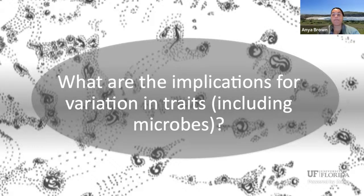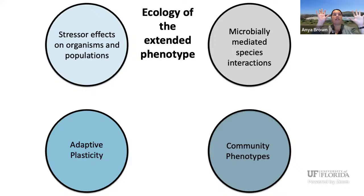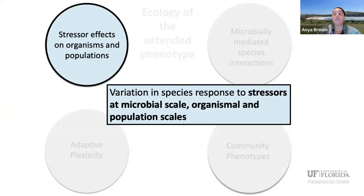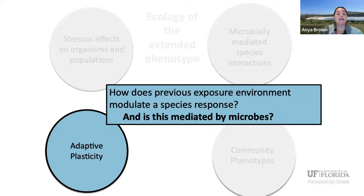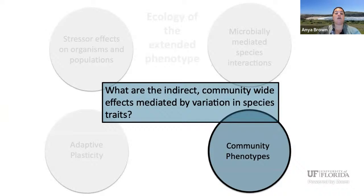In general, my work fits into four ecological concept areas: stressor effects on organisms and populations, or variation in species response to stressors from microbial to population scales; microbially mediated species interactions, incorporating microbes in our understanding of classical interactions like competition or facilitation; adaptive plasticity, or how previous exposure environments modulate a species' future response and whether this is mediated by microbes; and community phenotypes, the idea that there are indirect community-wide effects mediated by variation in species traits.